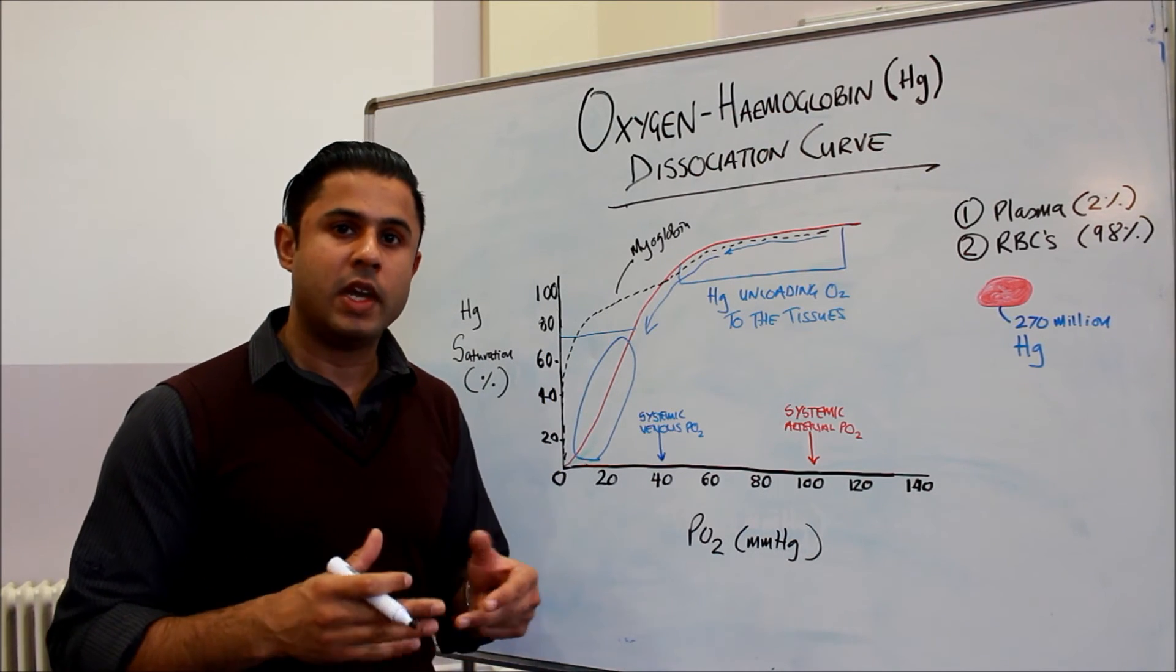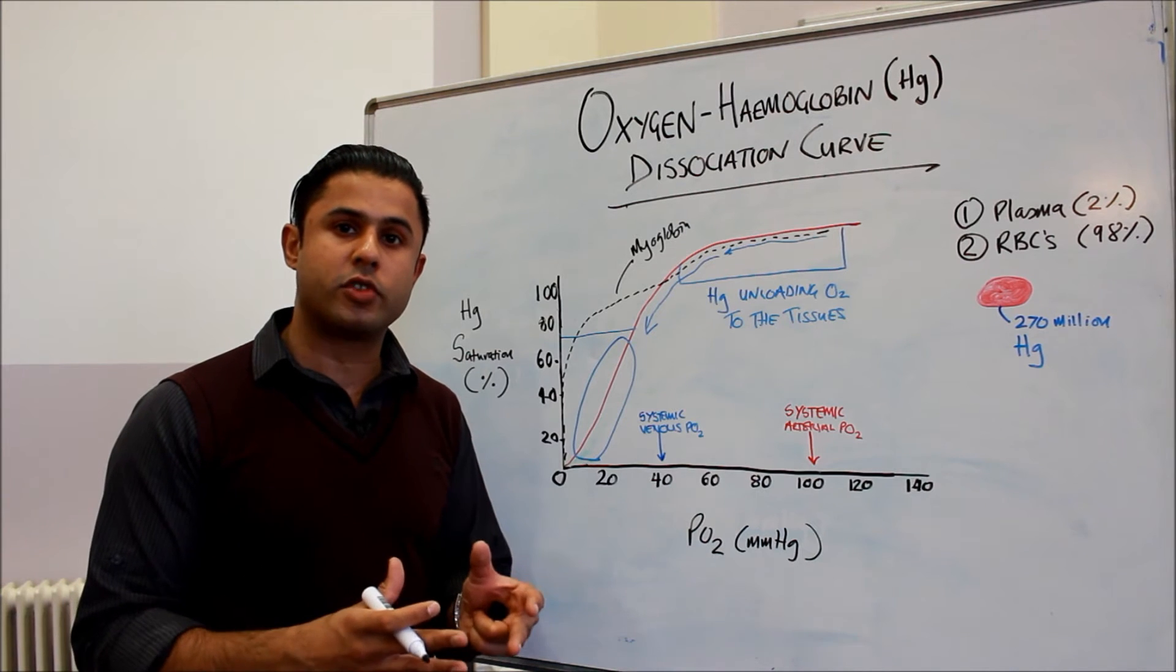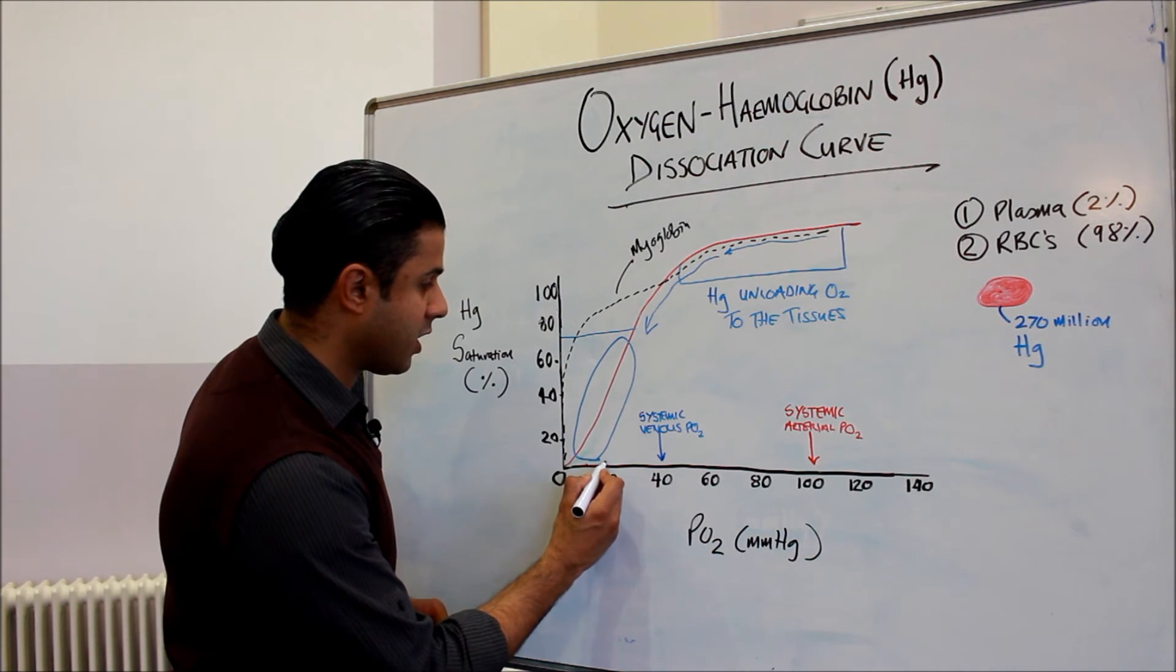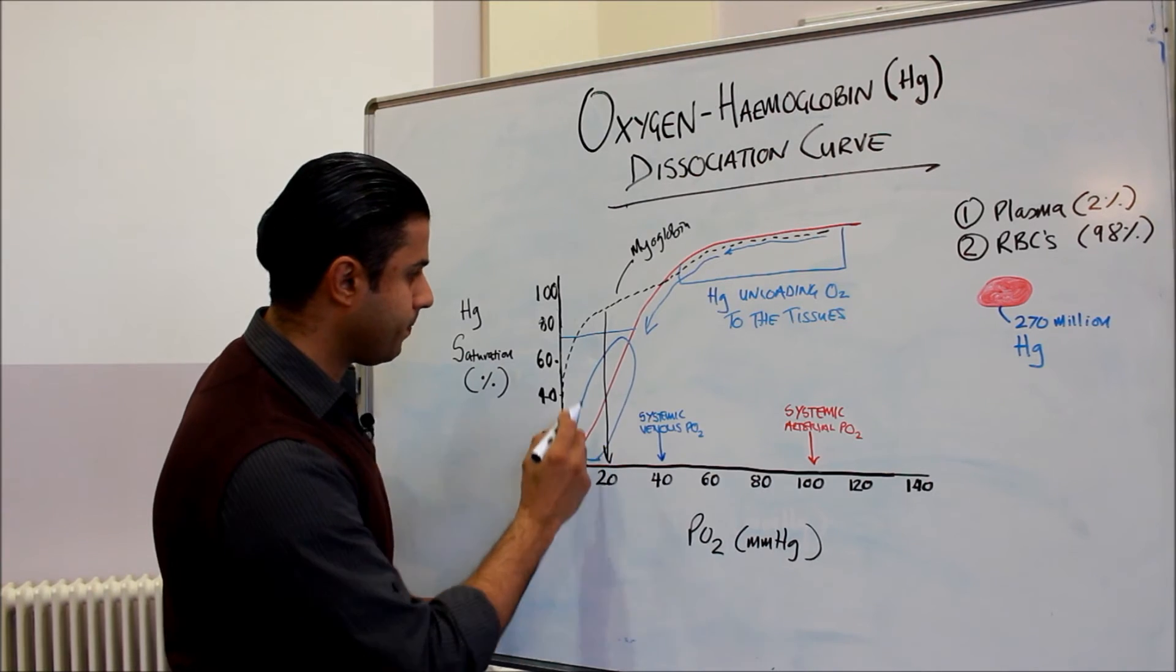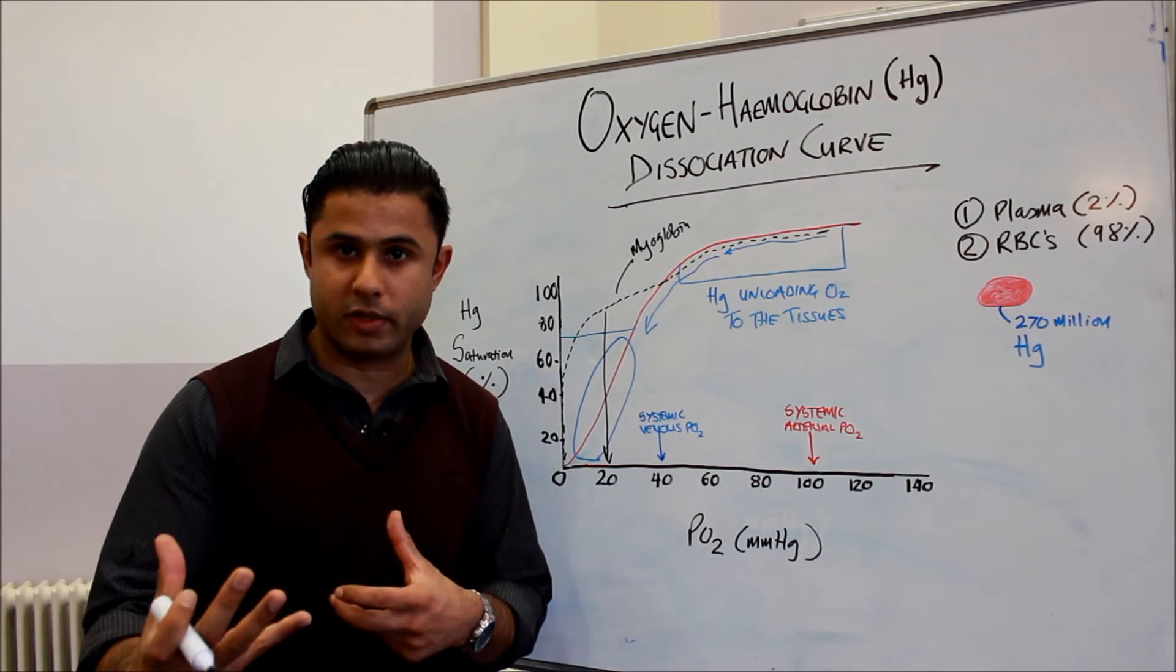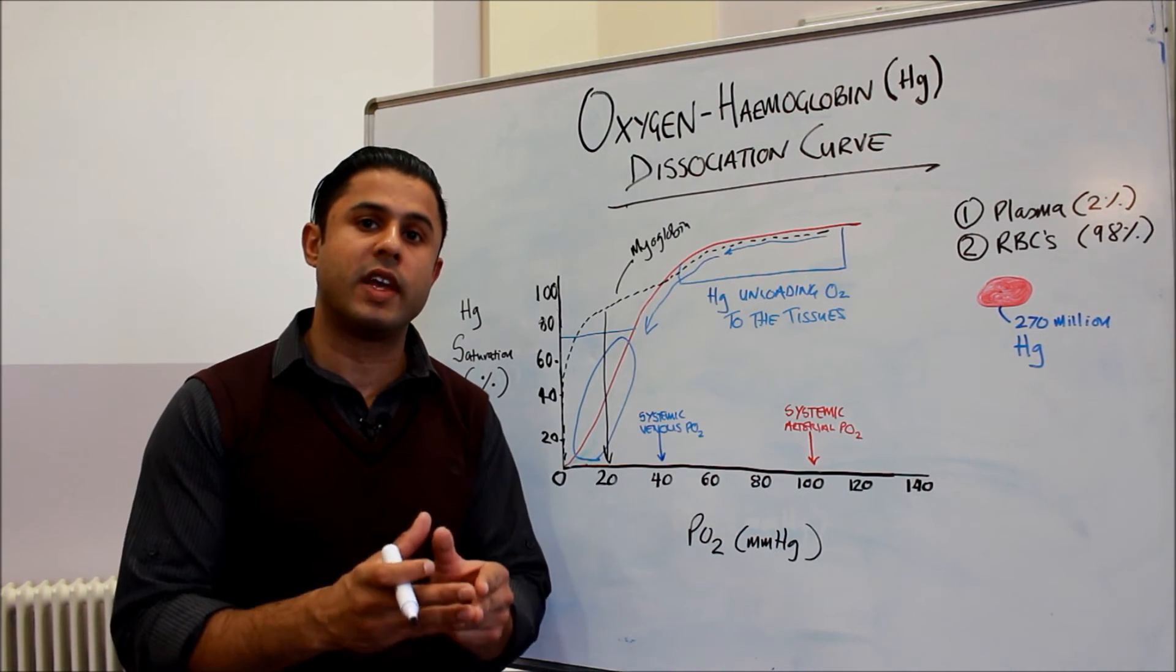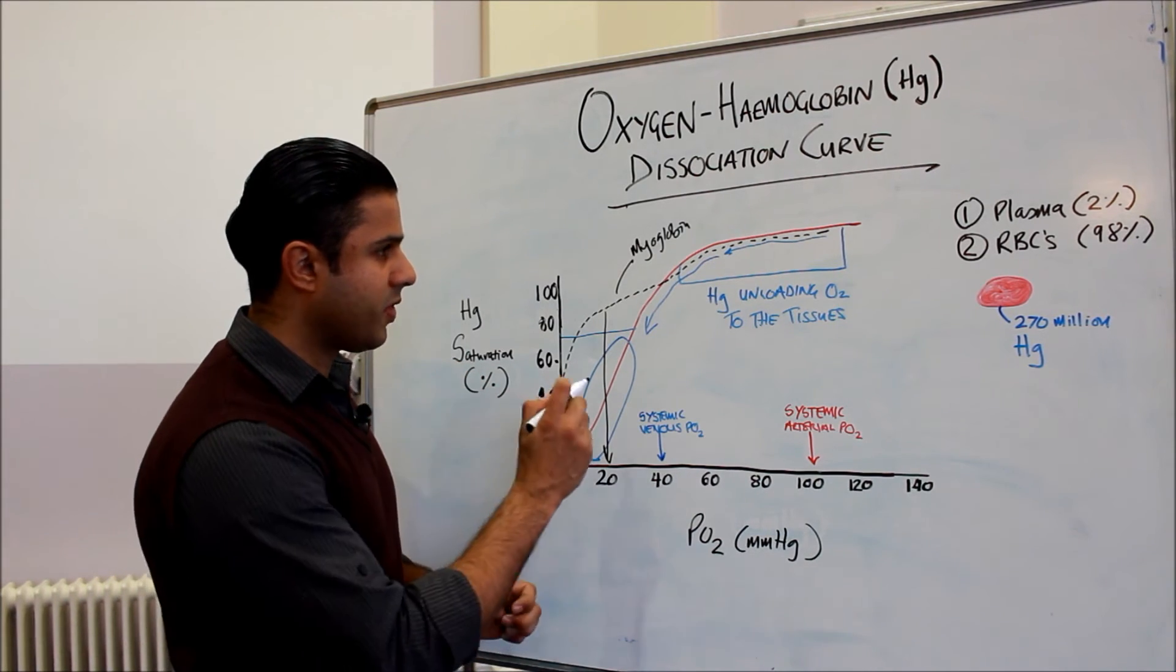The myoglobin will then, in conditions where the pressure of oxygen in the muscle has reduced to very low levels—so for example, for the sake of argument here we can see a pressure of 20 millimeters of mercury—causes the myoglobin to come into play and give up its oxygen to the tissues to continue to fuel that muscle contraction, to continue to provide the oxygen to produce ATP.